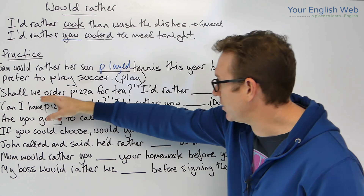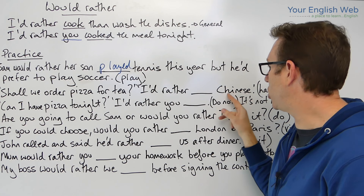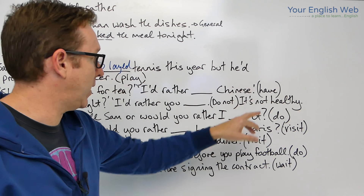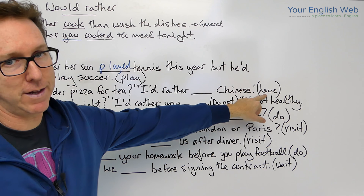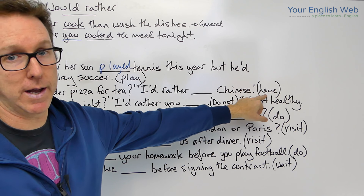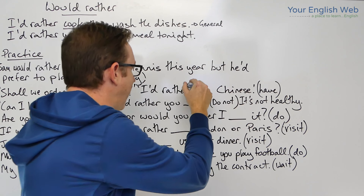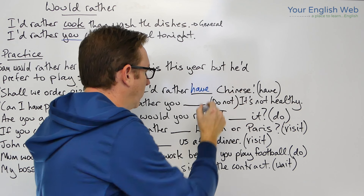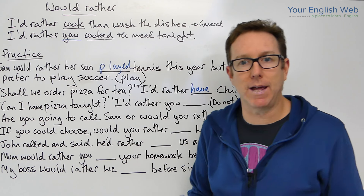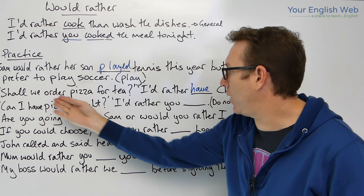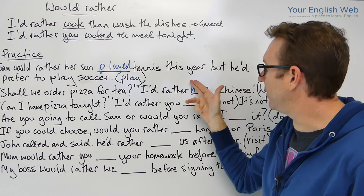'Shall we order pizza for tea?' — tea meaning dinner. We need to put the verb into past tense or infinitive. The sentence is 'I'd rather [have] Chinese.' Is anyone else involved? No, there's no second subject, so we use the infinitive: 'I'd rather have Chinese.'